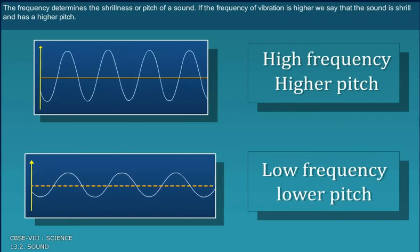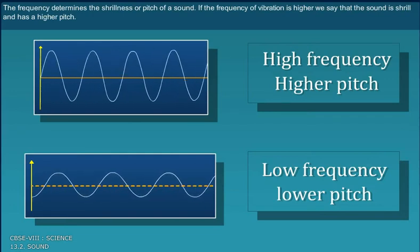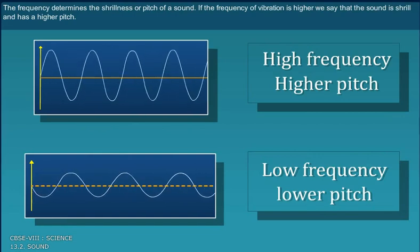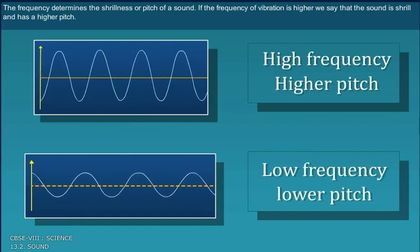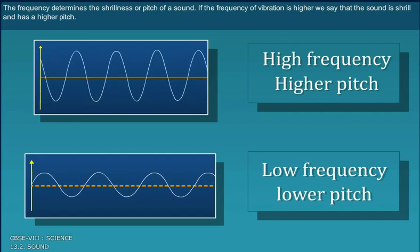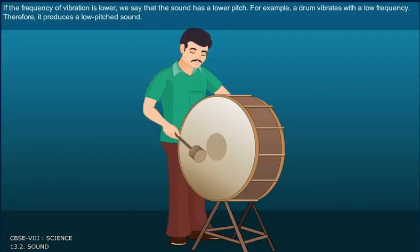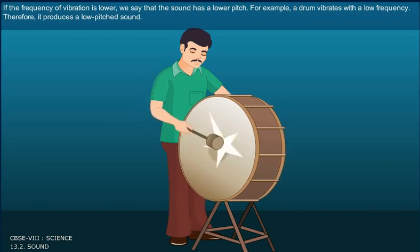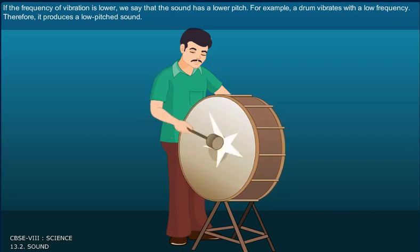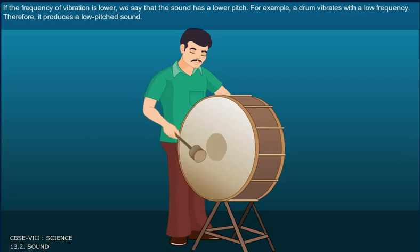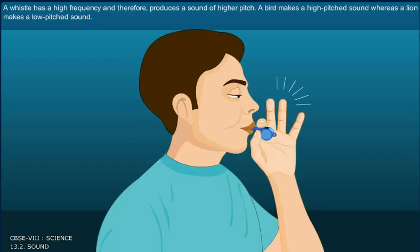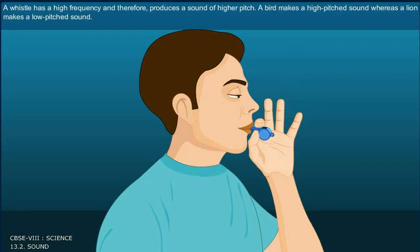The frequency determines the shrillness or pitch of a sound. If the frequency of vibration is higher, we say that the sound is shrill and has a higher pitch. If the frequency of vibration is lower, we say that the sound has a lower pitch. For example, a drum vibrates with a low frequency. Therefore, it produces a low pitched sound.